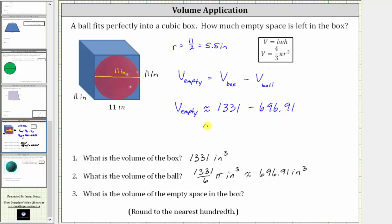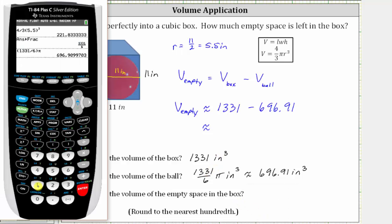And now let's go back to the calculator and determine this difference. If we did want the exact volume of the empty space, we would have to use the exact volume of the ball. So we have 1331 minus 696.91. Enter. The volume of the empty space is approximately 634.09 cubic inches.